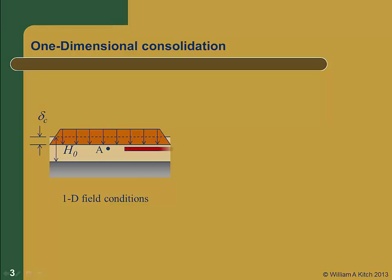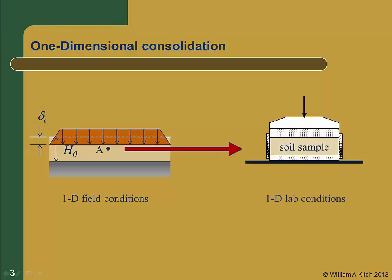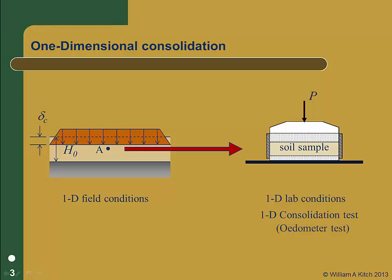To understand what is happening in the field, we can take a sample of soil from location A and transport it to the lab. We put the specimen from the sample in a device that allows for only one-dimensional consolidation. We can then place a load P on the specimen, and it will consolidate one-dimensionally. If we measure what happens in the lab, we should be able to use that data to predict the field settlement. This is called the one-dimensional consolidation test, or the odometer test.